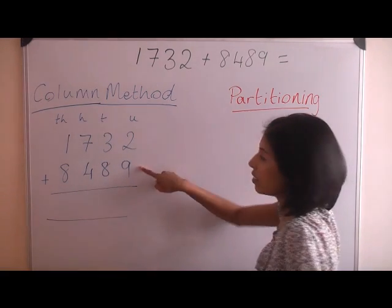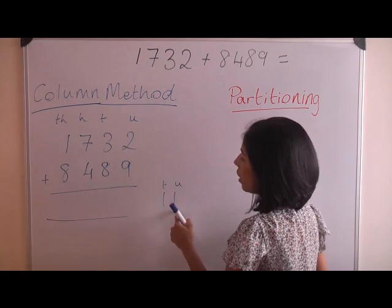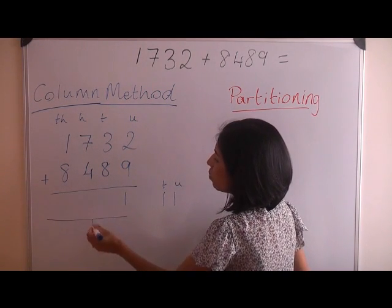So we have 2 plus 9, that's 11. We have a unit and a 10. We keep the units in the units column and we carry the 10 just below the line.